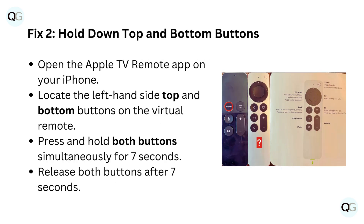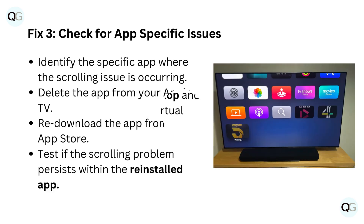Fix 2: Hold down top and bottom buttons. Open the Apple TV remote app on your iPhone. Locate the left-hand side top and bottom buttons on the virtual remote. Press and hold both buttons simultaneously for 7 seconds, then release both buttons after 7 seconds.